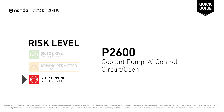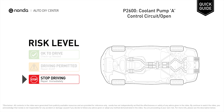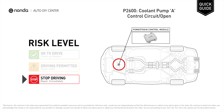P2600 is a diagnostic trouble code for coolant pump A control circuit open. Under this circumstance, stop driving and repair your vehicle immediately. It indicates an error with the auxiliary coolant pump control circuit.